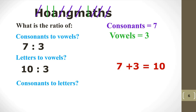What is the ratio of consonants to letters? We already know there are 10 letters altogether in 'Hoang Maths' and the consonants number 7. So therefore the ratio of consonants to letters is 7 to 10.